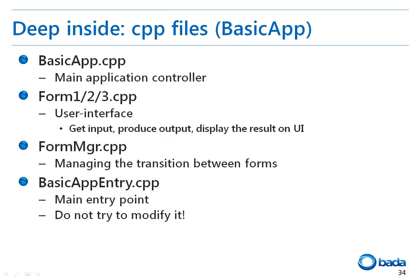Now let's have a look at the source files in more detail. First, we have the basicapp.cpp file, which controls the application lifecycle. User interactions and the user interface are implemented in the form 1, 2, or 3.cpp files. These files implement the functions to receive user inputs, generate corresponding outputs, display the outputs on the screen, and manipulate the UI. Then there is the form manager file, formMgr.cpp, which contains the code to manage forms 1, 2, and 3, and to perform transitions between them.